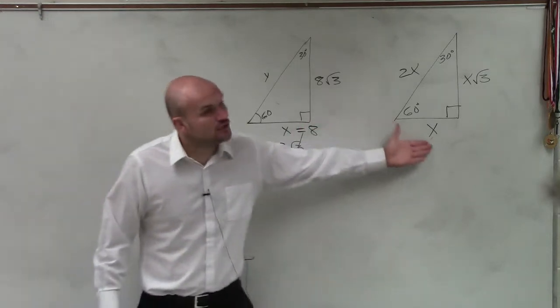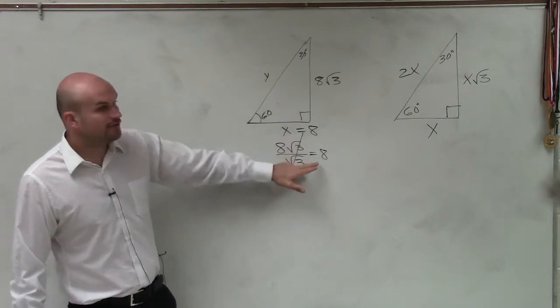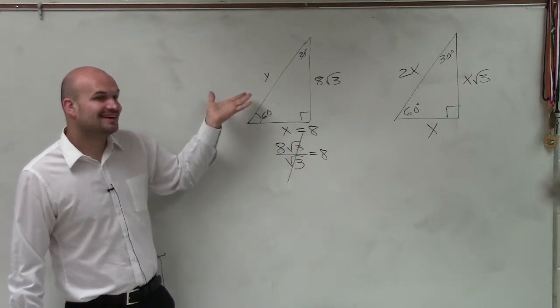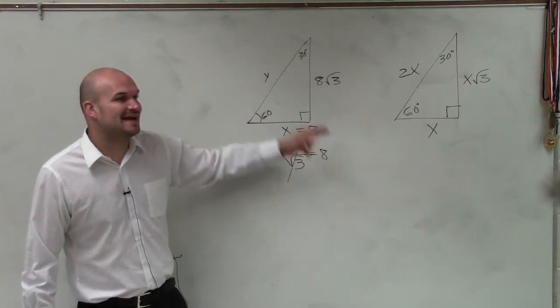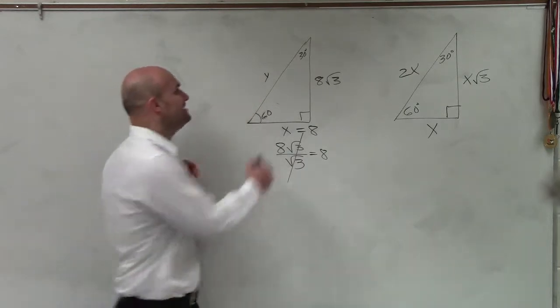Then, once I have my short leg, to find my hypotenuse, I need to multiply by 2. So to go from 8 multiplied by 2 is going to give me? Exactly. To go from 8 to my hypotenuse will be 16. Very good.